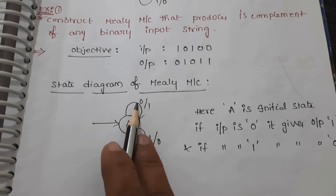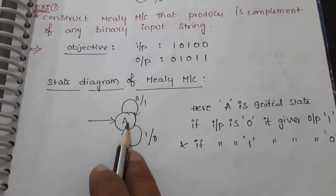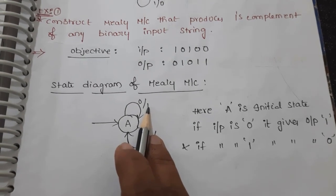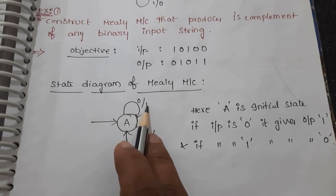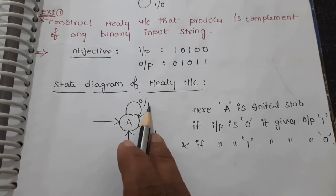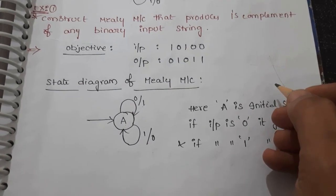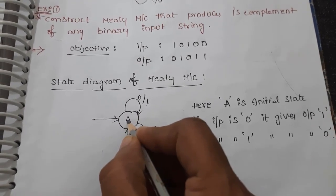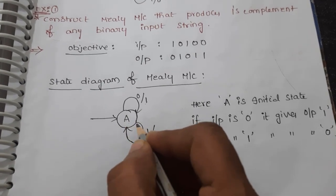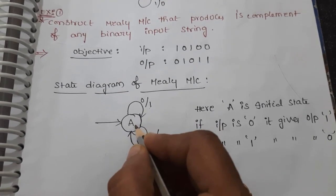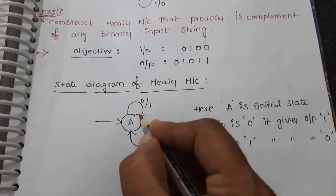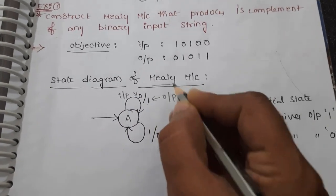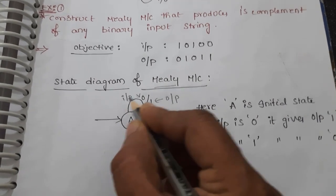In a Mealy machine, the outputs are associated with inputs. Here, A is the state, this one is the input, and this one is the output. The objective is: whatever the input binary string, its one's complement is to be represented. So for that, how I am designing the state machine — here this is the reset state, initially the machine is in state A. Initially it is reset, that means it is zero and it is in state A. Whenever zero is the input, here is the input and this shows the output. In a Mealy machine the output is associated with the input, that's why I am drawing like this.